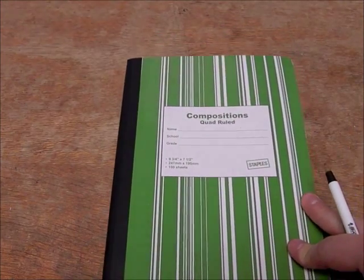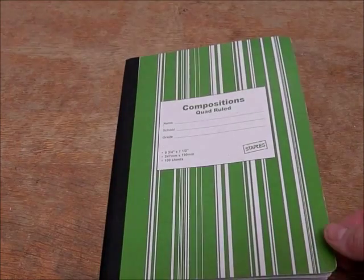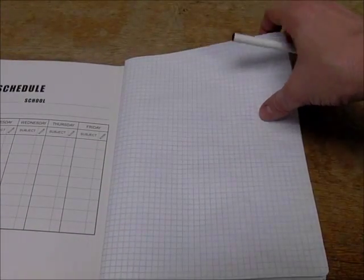This is the composition notebook. It's quad-ruled. It doesn't necessarily have to have this wonderful green stripe on the cover, but it does have to be a composition notebook in which the pages are sewn in, and the pages themselves are graph paper.